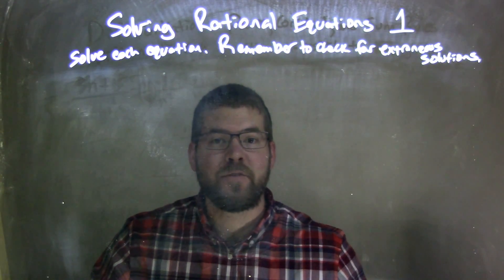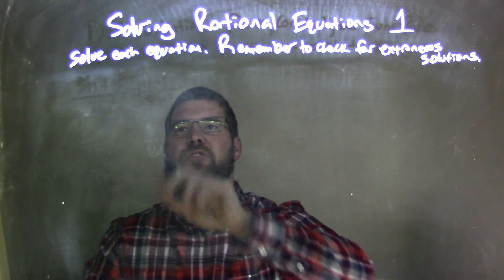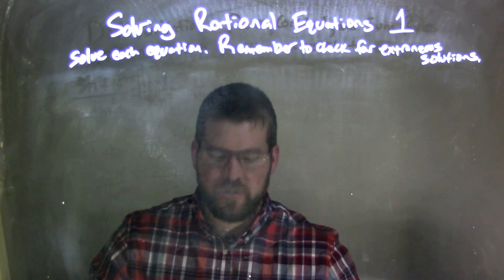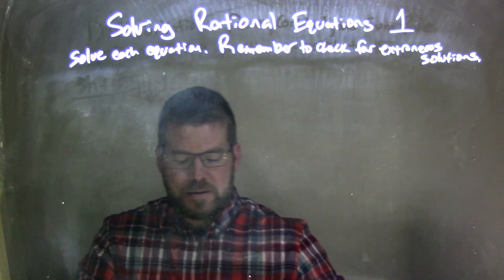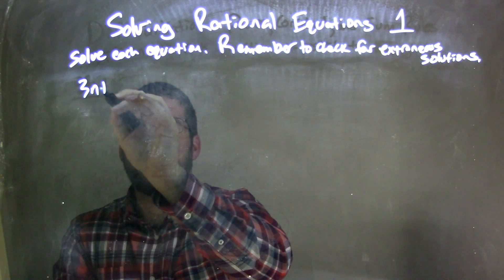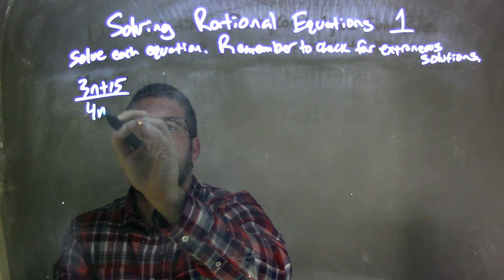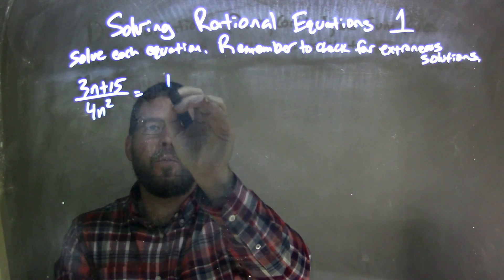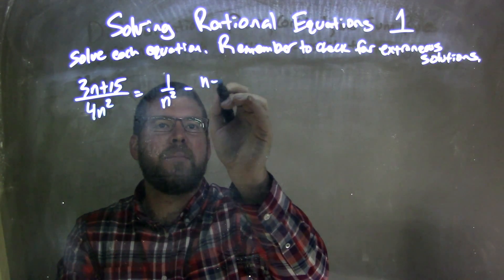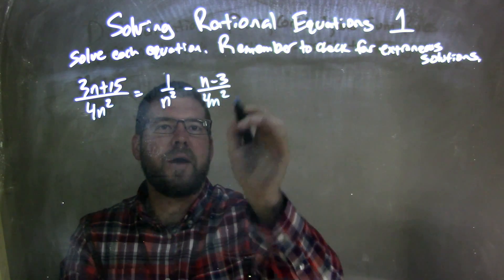Hi, I'm Sean Gannon, and this is MinuteMath. Today we're going to learn about solving rational equations. We're going to solve each equation, and remember to check for extraneous solutions. So if I was given this equation: 3n plus 15 over 4n squared equals 1 over n squared minus n minus 3 over 4n squared.